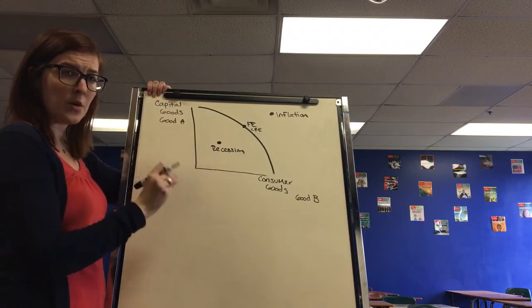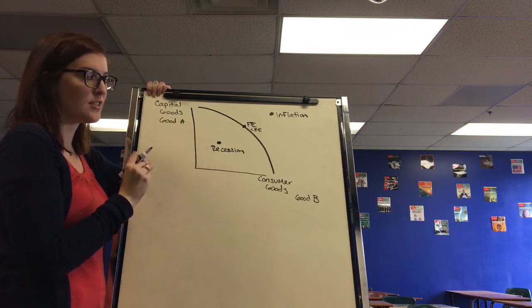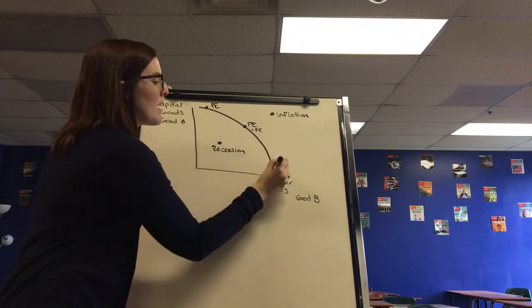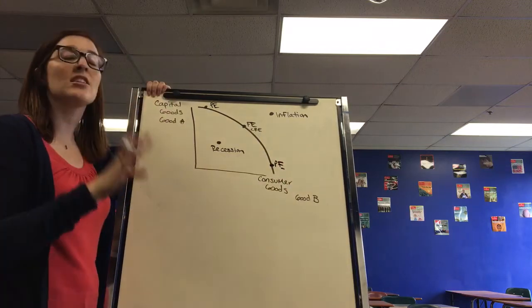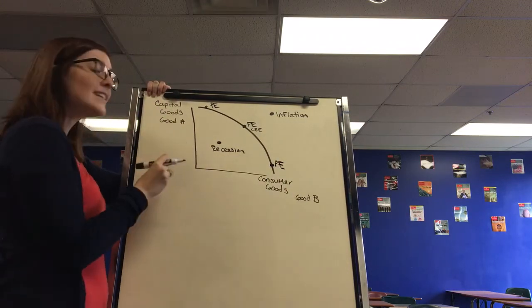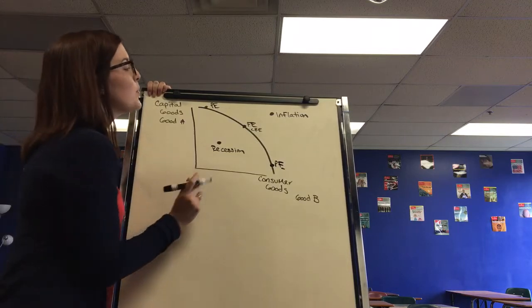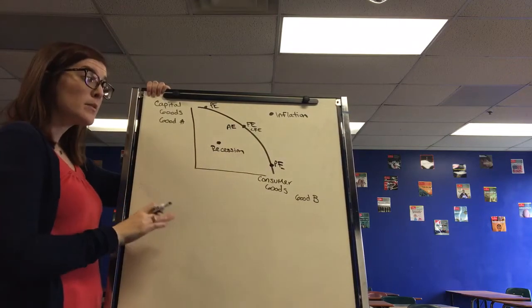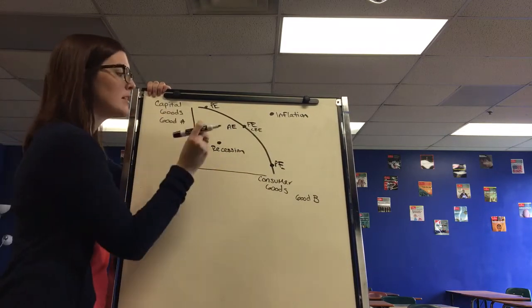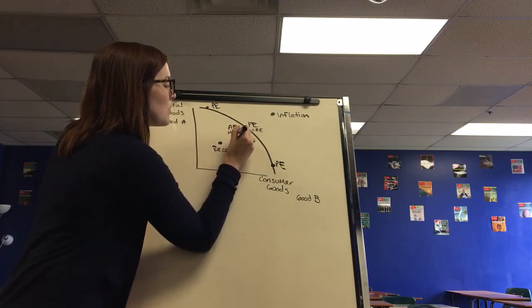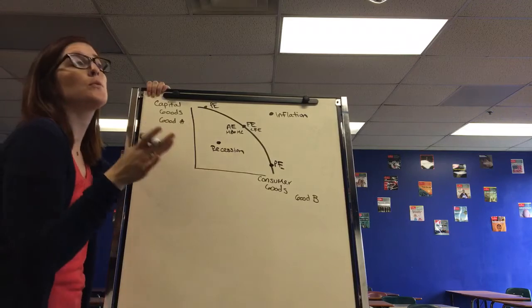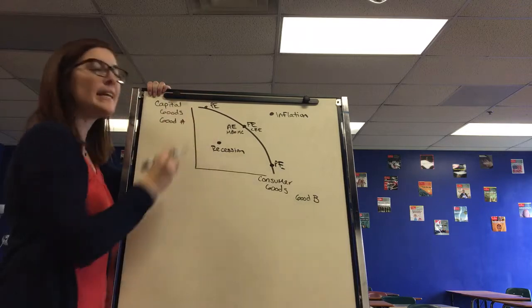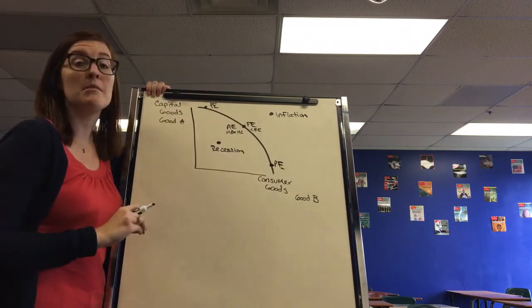You also need to know the definitions of allocative and productive efficiency. Productive efficiency describes any point along the PPC. It doesn't matter if you're making more consumer goods or more capital goods, as long as you're making the best use of your resources. Allocative efficiency just describes one point - the exact middle point of the line. This represents the best combination, an equal mix of capital and consumer goods, or where our marginal benefits equal our marginal costs. This is the best combination for the present.